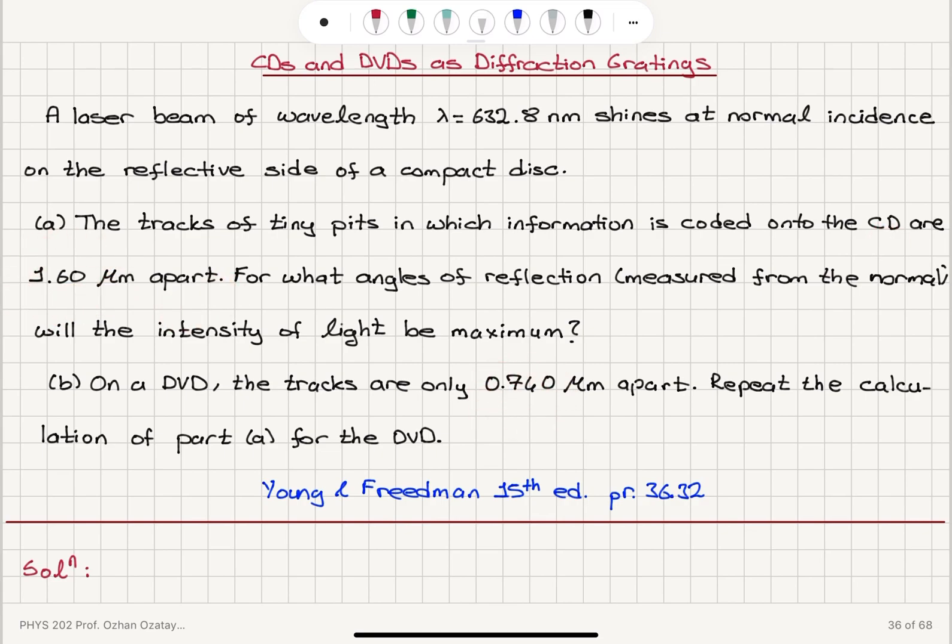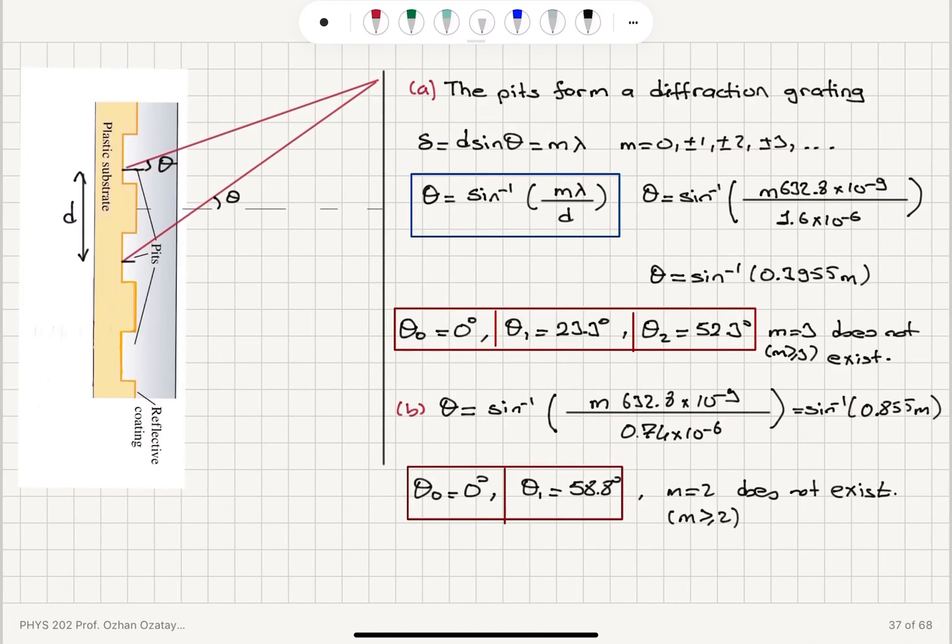0.74 micrometers apart on a DVD. Provided that we use the same laser beam of light with this wavelength at normal incidence, we want to know for what angles of reflection measured from the normal the intensity of light will be maximum. That means we're looking for constructive interference.